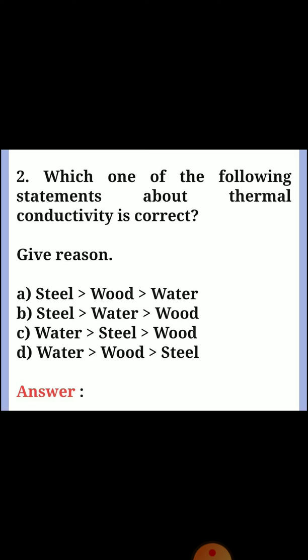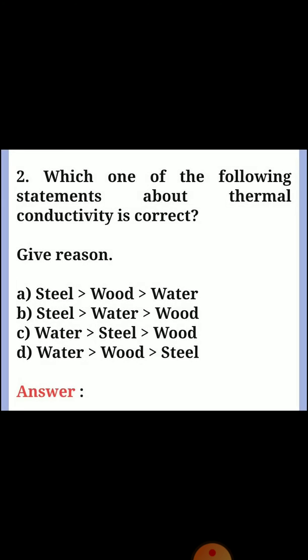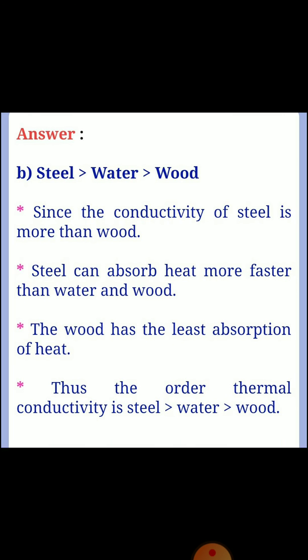Question 2: Which of the following correctly orders thermal conductivity: steel, wood, water? Answer: The correct order is steel > water > wood. Since the conductivity of steel is more than water and wood, steel can absorb heat faster. Wood has the least absorption of heat. Thus, the order of thermal conductivity is steel, water, wood.